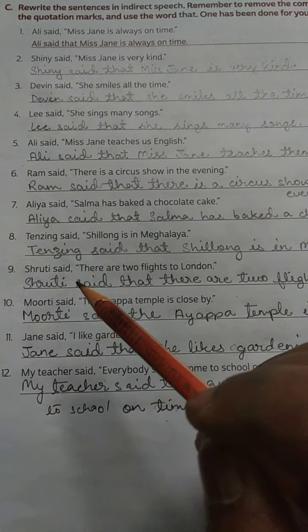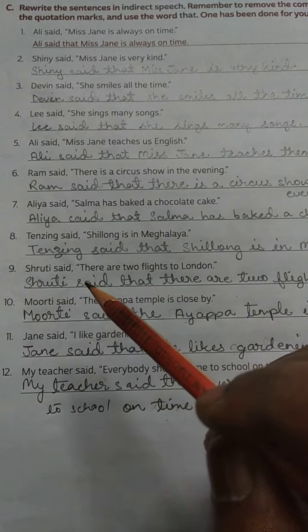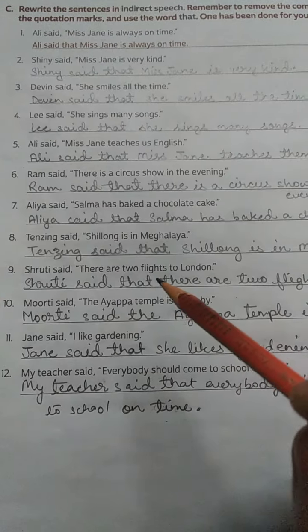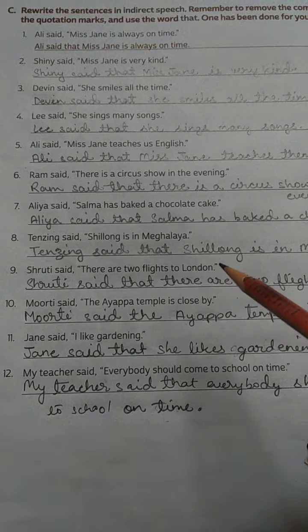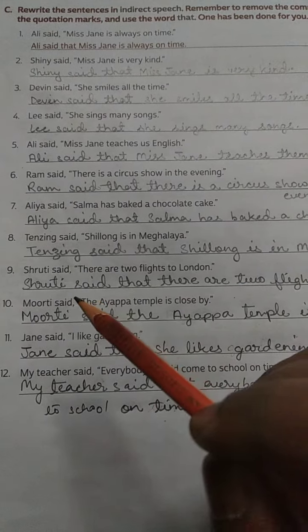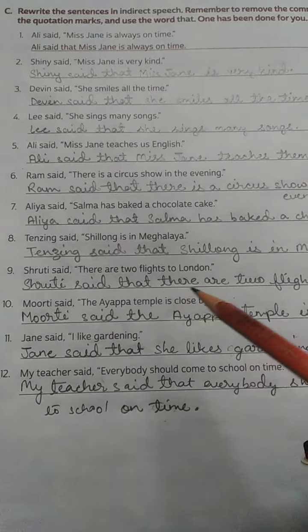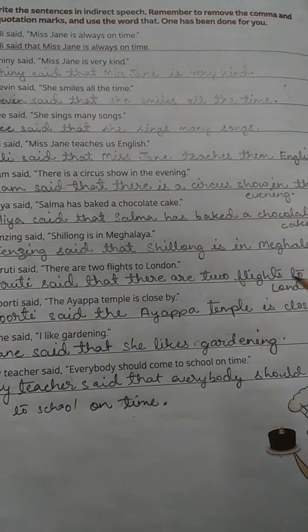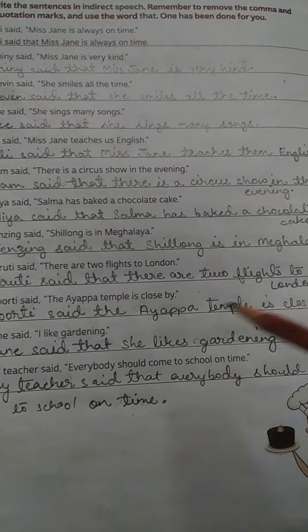Shruti said, comma, inverted commas open, there are 2 flights to London, inverted comma closed, full stop. Answer: Shruti said that there are 2 flights to London, full stop.